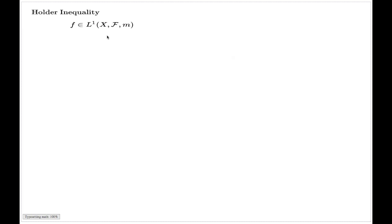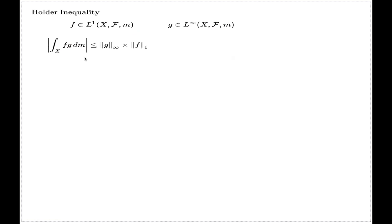This is the first of two comments on Hölder's inequality. I'll present a very simple version of this inequality: if a function is integrable with respect to some measure space and another function is essentially bounded with respect to the same measure space, then the Hölder inequality states the integral of their pointwise product never exceeds the right-hand side. It's a bit of a stretch to call this the Hölder inequality, but I present it in the framework of the general Hölder inequality proved in the next comments.